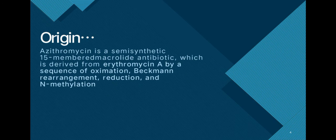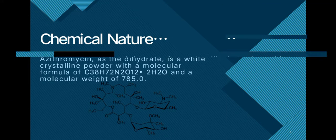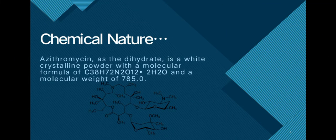Then origin: azithromycin is a semi-synthetic 15-membered macrolide antibiotic which is derived from erythromycin A by a sequence of oximation, Beckmann rearrangement, reduction and N-methylation. Then chemical nature: azithromycin as the dihydrate is a white crystalline powder. Here is the molecular formula C38H72N2O12·2H2O and its molecular weight is 785.